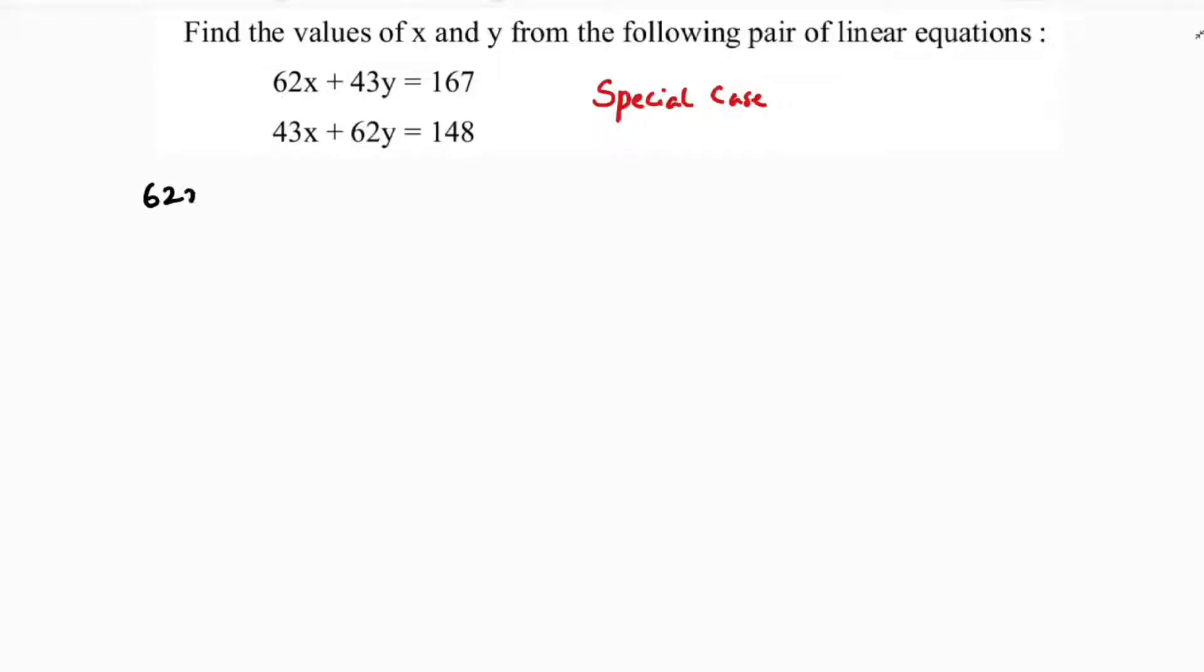So first add them: 62x plus 43y equals 167, and 43x plus 62y equals 148.